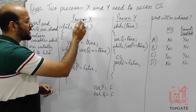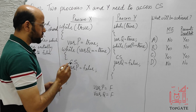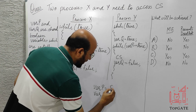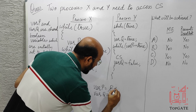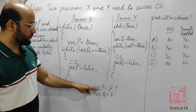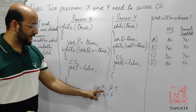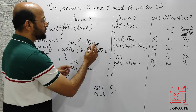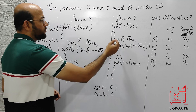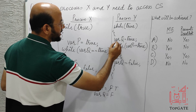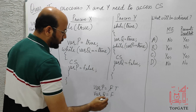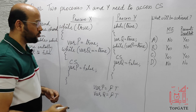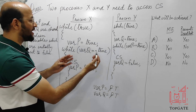Process X first sets variable P equal to true. After a context switch, process Y executes and sets variable Q equal to true — it was initially false, now it is also set to true. Then we do another context switch and return to process X.